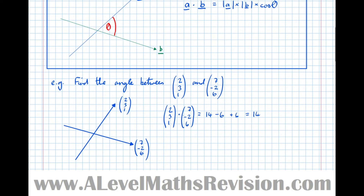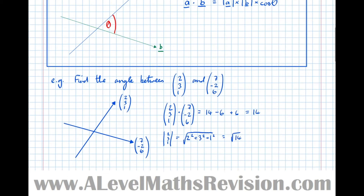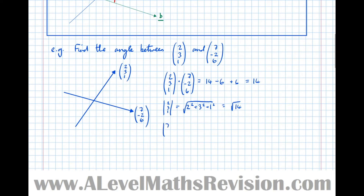Now the length of (2, 3, 1) — it's just Pythagoras in three dimensions, which is no harder than two dimensions. Two squared plus three squared plus one squared equals 4 plus 9 is 13, add 1 is 14, so it's root 14. The length of (7, -2, 6) is the square root of 7 squared plus 2 squared plus 6 squared. So 36 plus 4 is 40, add 49 is 89, so it's the square root of 89, which is root 89.